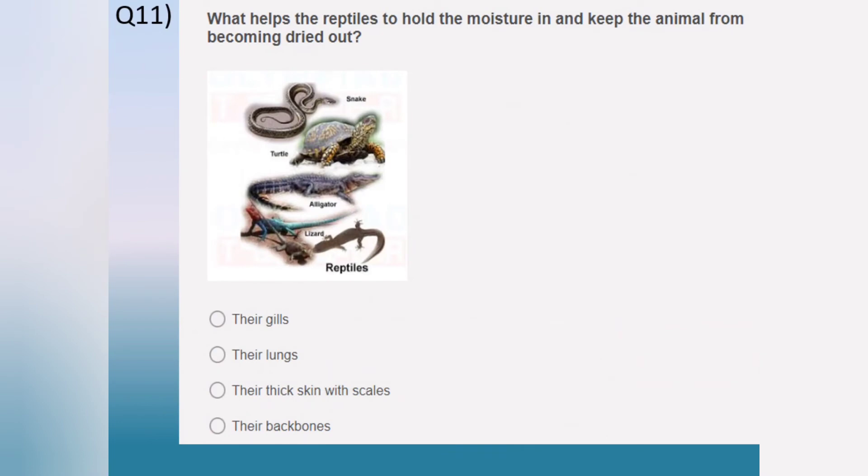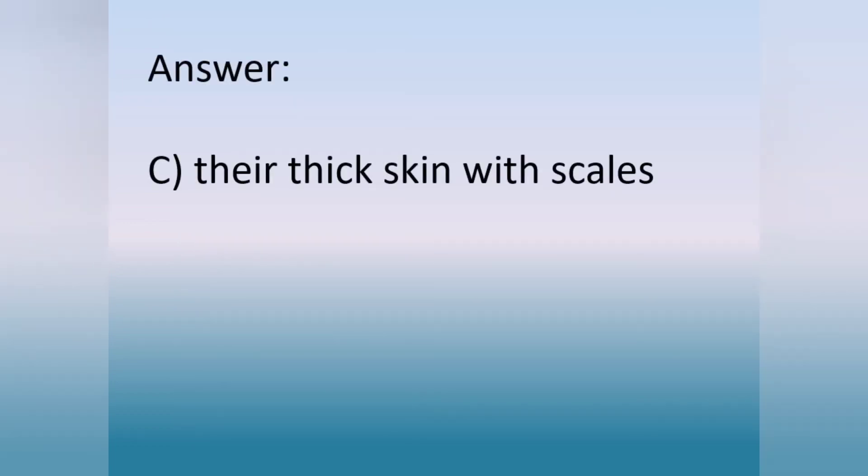Question number 11. What helps the reptiles to hold the moisture in and keep the animal from becoming dried out? Option A. Their gills. Option B. Their lungs. Option C. Their thick skin with scales. Option D. Their backbones. The answer is option C. Their thick skin with scales.